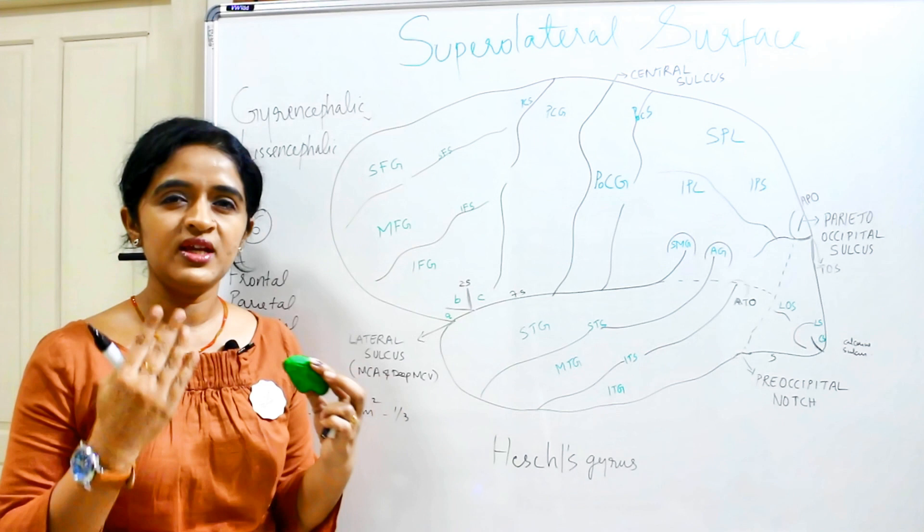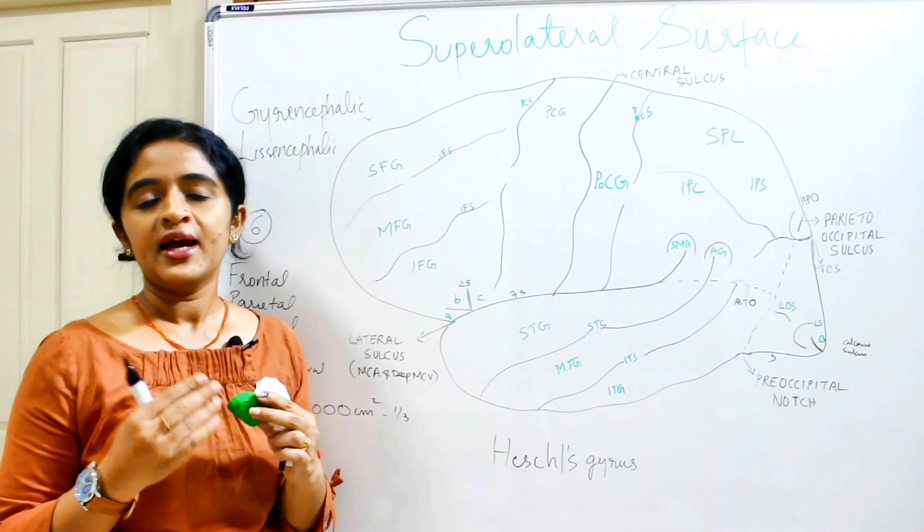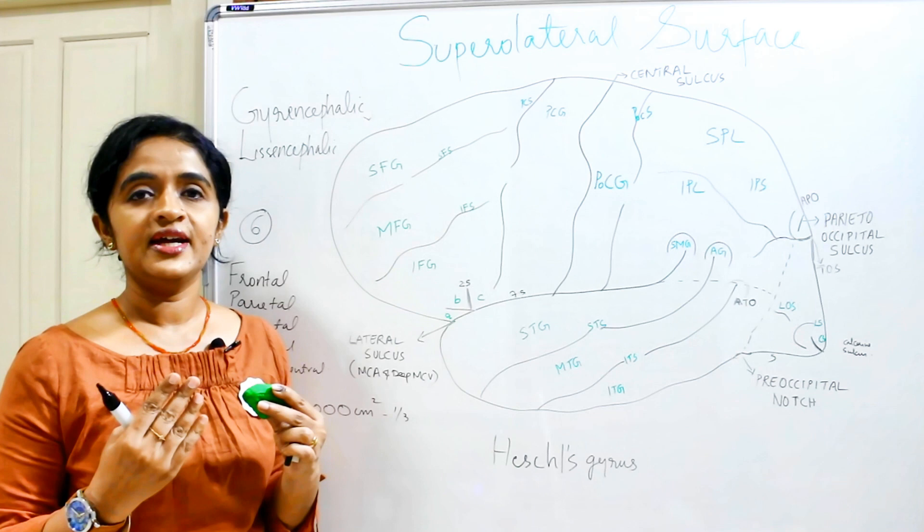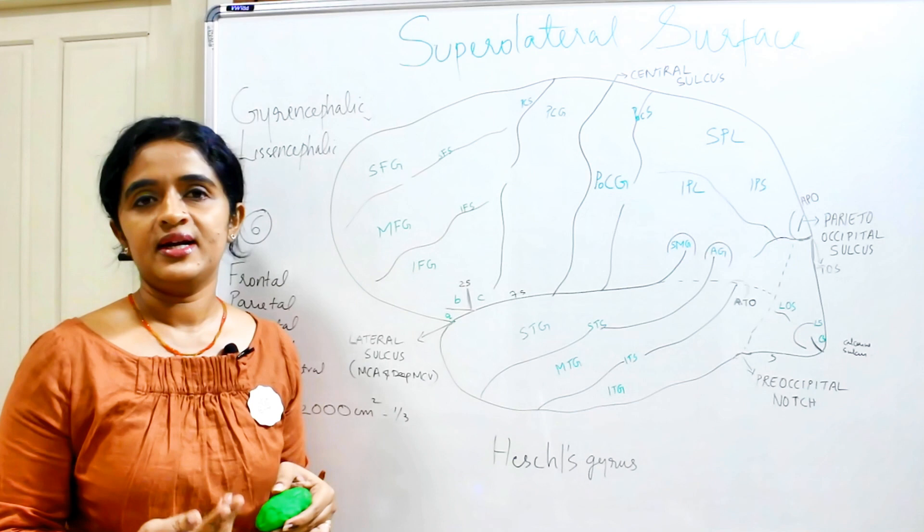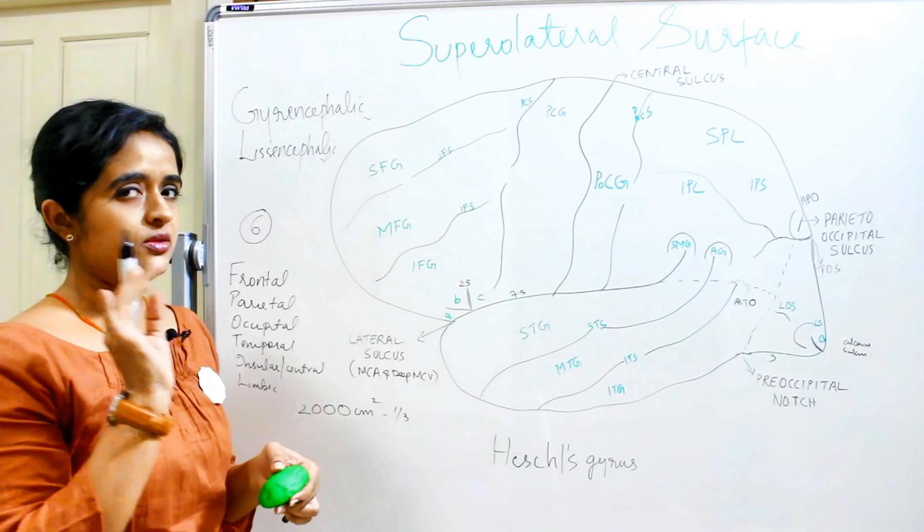The term gyrencephalic means the brain is folded into many folds. In contrast, lower mammals, birds, and reptiles have a smooth brain without any sulci and gyri — that type of cerebrum is called lissencephalic. So these are the two types of cerebrum according to the degree of convolution.